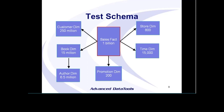There's a book dimension table with 15 million records, and each book has an author. We have 800 stores and a time dimension, so we can bring in quarter, fiscal year, and day of the week. Lastly, we have a promotions table with just 200 records. In our sales, we randomly assign a promotion to some sales — simply something like 10% off your order. So there's our schema.